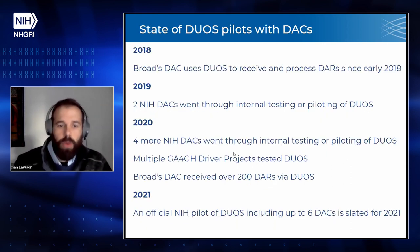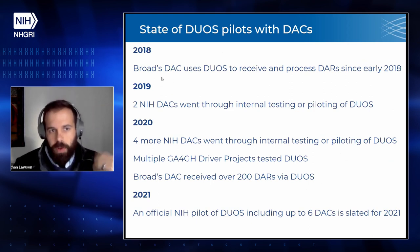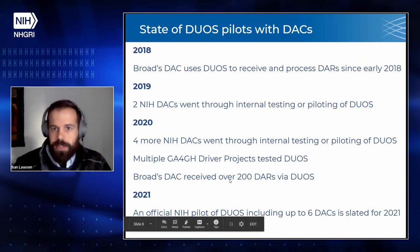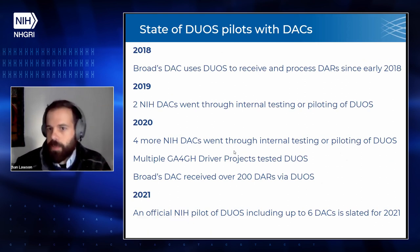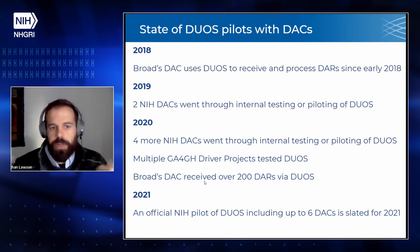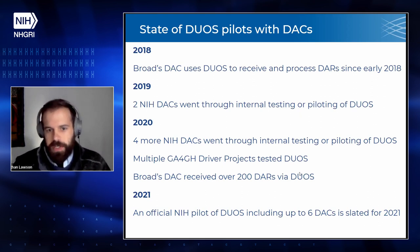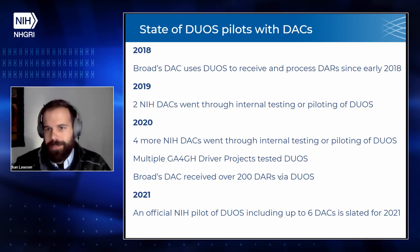To give an overview of where this has been and where it's going: we started DUOS in 2018 at the Broad with a pilot data access committee. Then in 2019, we had two NIH stacks — NHGRI and NHLBI — with some internal testing and previous requests. This year we've had great opportunities to work with driver projects at GA4GH, other DACs at NIH, and a huge increase in volume at the Broad. We're excited to be moving forward with an official NIH pilot of DUOS for up to six stacks in 2021. You're welcome to visit duos.broadinstitute.org to play around with the software.